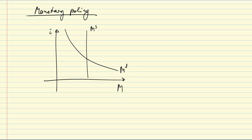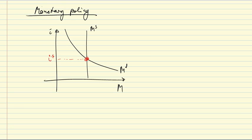At the intersection where money demand equals money supply, we get an equilibrium interest rate that clears the money market, clears the financial market. The interest rate is the variable that adjusts for the financial market to be in equilibrium, and the financial market is here expressed in terms of stocks. So we're talking about a stock equilibrium — the interest rate clears the market for stocks of money and bonds.